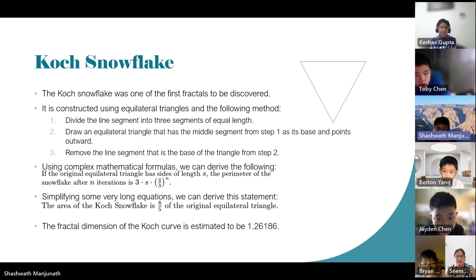Using complex mathematical formulas, we can derive the following. If the original equilateral triangle has sides of length S, the perimeter of the snowflake after N iterations is 3 times S times 4 third to the power N. Simplifying some very long equations, we can derive this statement. The area of the Koch snowflake is 8 fifth of the original equilateral triangle.